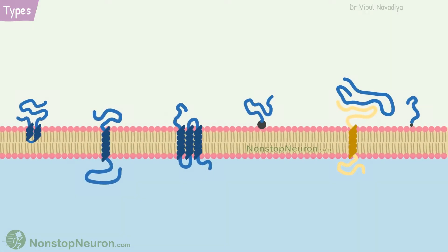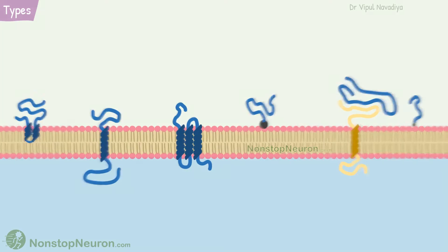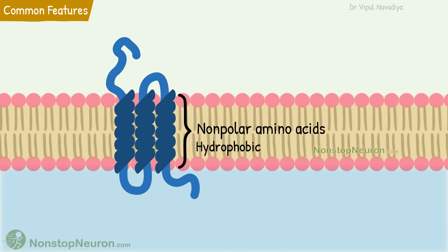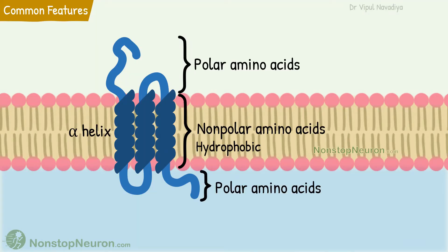So those were the different types of membrane proteins. Now let's see some common features among them. Regarding structure, for all integral proteins, the segment of the protein inside the membrane is largely made up of non-polar amino acids — they are hydrophobic — so they can stay comfortably in the hydrophobic environment inside the lipid bilayer, and this segment is usually an alpha helix. The outer segments are largely made up of polar amino acids; they are hydrophilic, which is suitable to stay with water on both sides of the membrane.